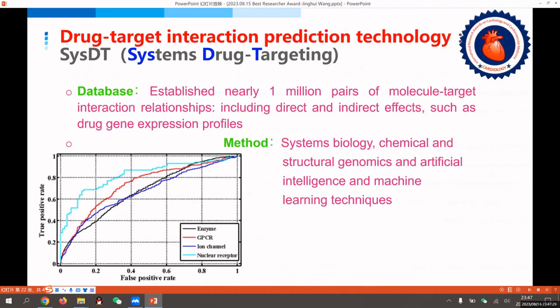This is the target prediction technology we built. It doesn't require the three-dimensional structure of the receptor but only the primary sequence information of the protein. The characteristic fragments of the ligand binding region are extracted through artificial intelligence technology, which can predict most proteins in the human body.